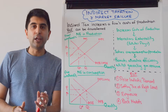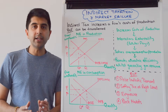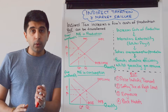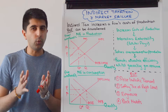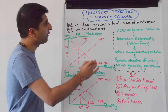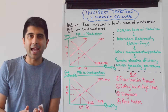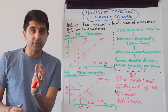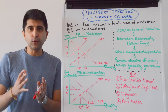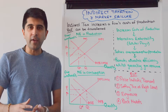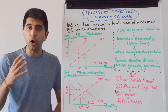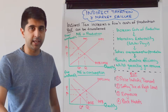Hi everybody! In this video, let's look at how indirect taxation can be used to solve market failure. We remind ourselves: what is indirect taxation? Well, it's a tax that increases a firm's cost of production but can be transferred to the consumer via a higher price. We're looking at using indirect taxation to solve market failures where there is an overconsumption and not an overproduction taking place.